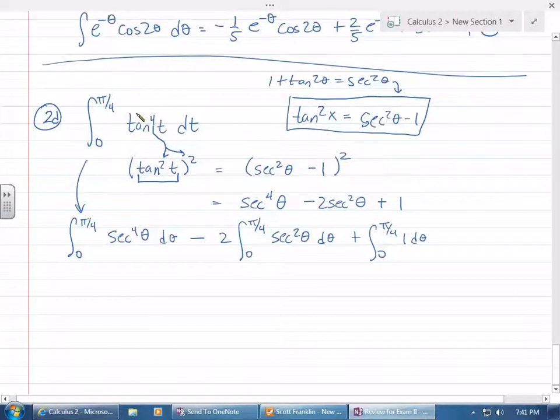Starting with tangent to the fourth, I rewrote it as tangent squared squared, replaced tangent squared with secant squared minus one, and squared that using FOIL.